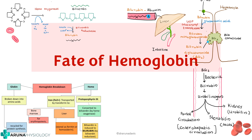Hi all. In this video we are going to see about the fate of hemoglobin. This is important because it is the basis of classification of jaundice, which is a very important topic. So let us see what happens to hemoglobin and how bilirubin is formed.